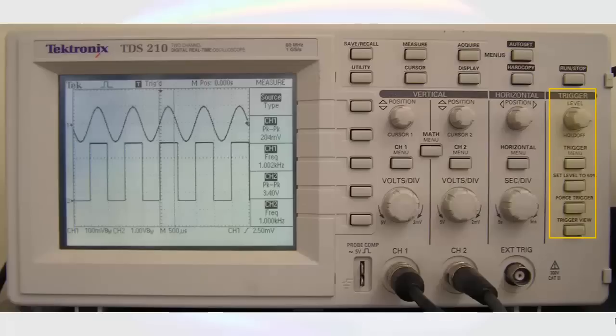The right-hand set of controls refers to the trigger. Since we are looking at time-varying signals, we need to tell the oscilloscope at what voltage level it needs to start looking for a signal. If we do not set a trigger level, the waveforms will roll across the screen, and we will not be able to see a stable waveform. The trigger level, or the voltage level at which it starts to look for the waveform, is indicated on the right-hand side of the screen.